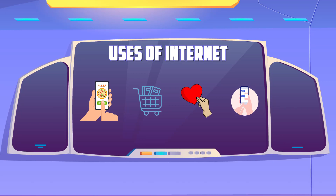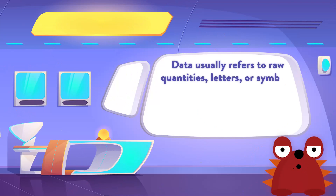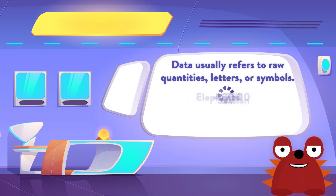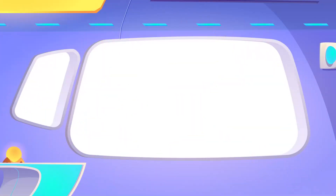Let's move on to Data and Information now. Data usually refers to raw quantities, letters or symbols. One example would be: Elephants, 4000, 7500, 3, 2.7, Asian. And once raw data like this is processed, it is known as Information, which would look something like this.